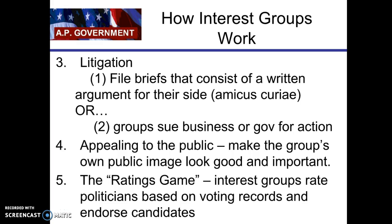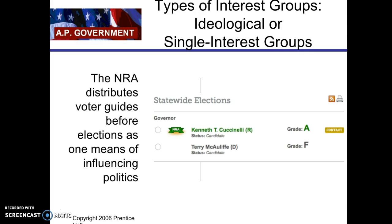Interest groups can also make appeals to the public and use a rating scheme, where they rate politicians based on their voting records and endorse certain candidates. The most famous interest group that does this is the NRA, which gives voter guides and rates people. In the 2014 Virginia governor's election, they rated Republican nominee Ken Cuccinelli an A and Democrat Terry McAuliffe — who actually won — an F, indicating the NRA did not believe McAuliffe would support their issues.